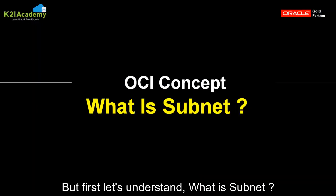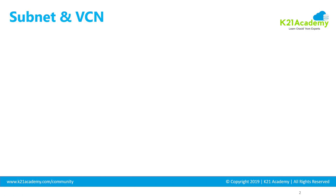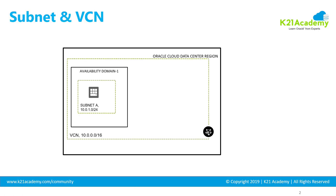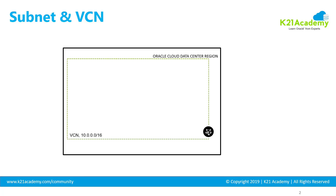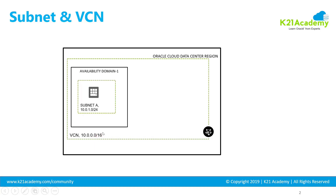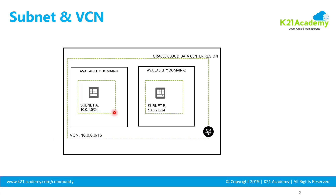First, let's understand what is a subnet. A subnet is a bigger network divided into a smaller part. As you see in the diagram here, we have a bigger network represented by this outer dotted line in Oracle Gen2 Cloud — we call it Virtual Cloud Network or VCN. This VCN has a CIDR 10.0.0.4/16. This bigger network is divided into two different smaller subnets: Subnet A represented by 10.0.1.0/24 and 10.0.2.0/24. So subnet is nothing but a bigger network broken down into a smaller network.